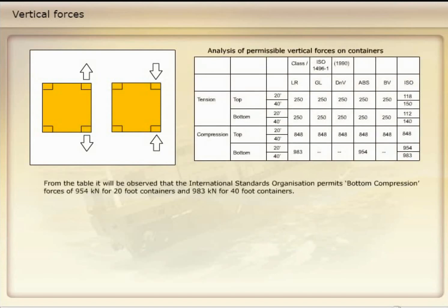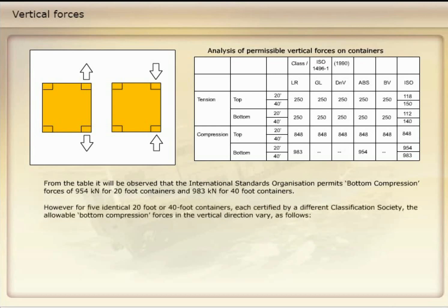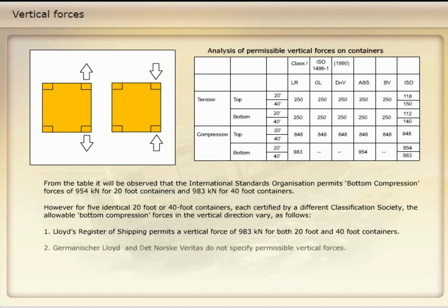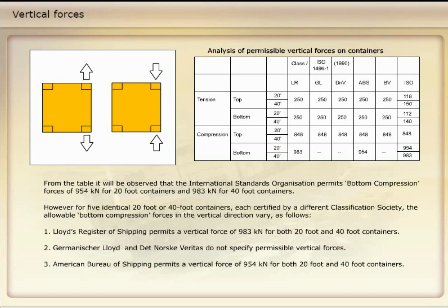From the table, it can be observed that the International Standards Organization permits bottom compression forces of 954 kN for 20-foot containers and 983 kN for 40-foot containers. However, for five identical 20-foot or 40-foot containers each certified by a different classification society, the allowable bottom compression forces in the vertical direction vary as follows: 1. Lloyd's Register of Shipping permits 983 kN for both 20-foot and 40-foot containers. 2. Germanischer Lloyd and Det Norske Veritas do not specify permissible vertical forces. 3. American Bureau of Shipping permits 954 kN for both 20-foot and 40-foot containers. 4. Bureau Veritas does not specify permissible vertical forces.